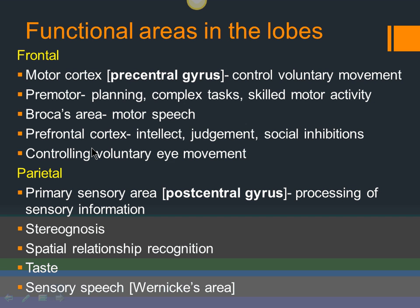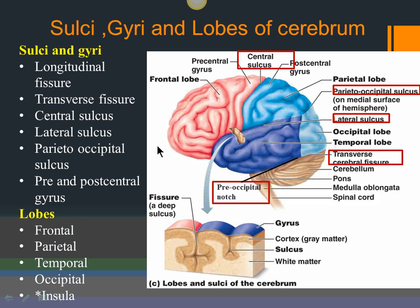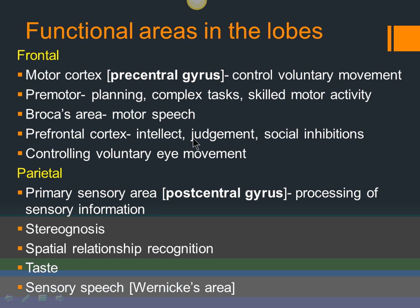In front of Broca's area is the prefrontal cortex. This area deals with intellect, judgment, and social inhibitions. Judgment — deciding to take one road and not another — requires conscious deliberation. This prefrontal cortex takes time to develop and usually matures by age 21, which is why teenagers sometimes cannot make good judgments. When parents ask 'what were you thinking?' — they literally couldn't think that way because the area had not developed.